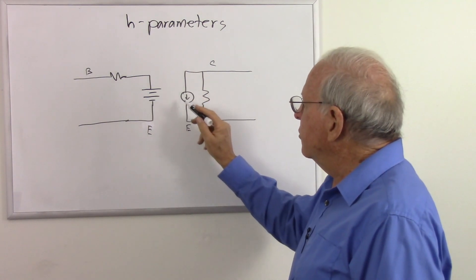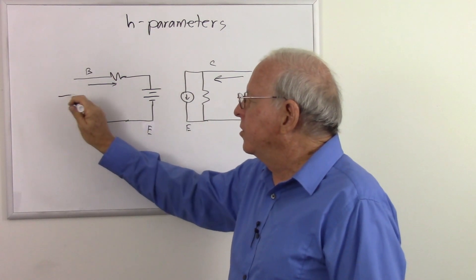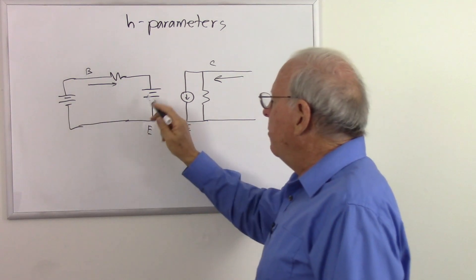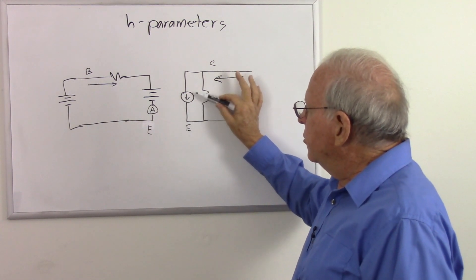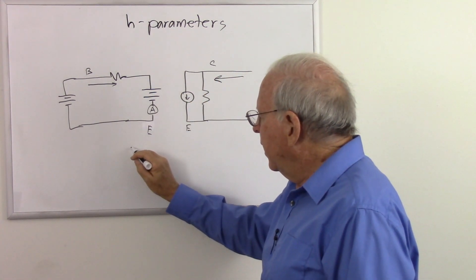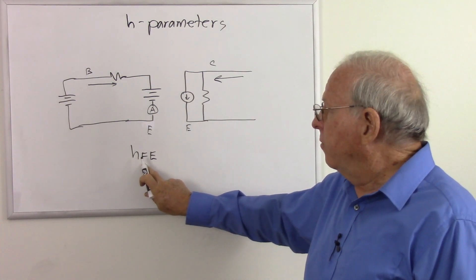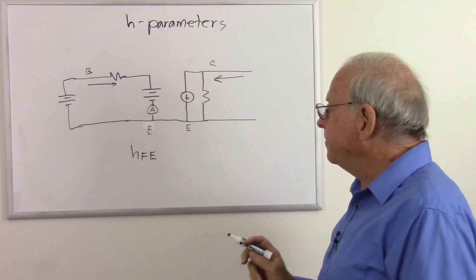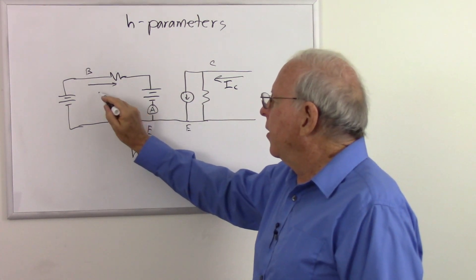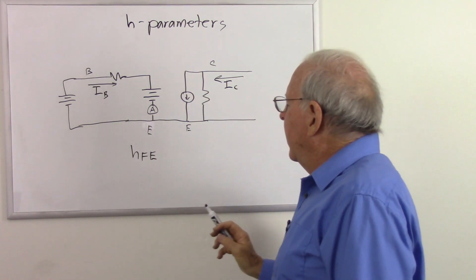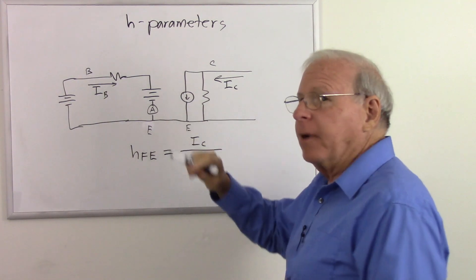The parameter we're most interested in is how much current we have into the collector based on the current going into the base. The current going into the base depends on what voltage is supplied and how big this voltage is. We're interested in how much current we have here based on that current. There's a hybrid parameter called HFE — that stands for hybrid parameter, forward current ratio, common emitter circuit. So we're interested in our collector current I sub C based on our base current I sub B.